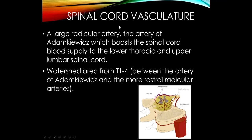There is one particularly large radicular artery worth knowing by name: the artery of Adamkiewicz. This especially large radicular artery supplies mainly the lower thoracic and upper lumbar spinal cord. This creates a watershed area above the artery of Adamkiewicz — around T1 to T4 — where there is relatively less vascular supply. Here we can see it contributing to the anterior spinal artery.